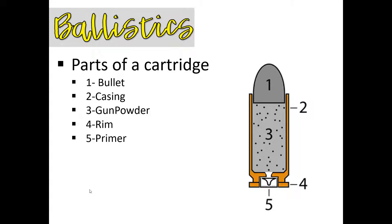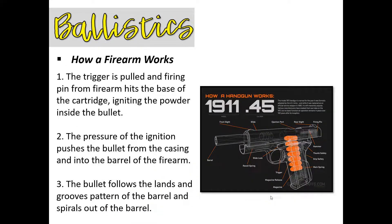Let's look at the parts of a modern day cartridge. Starting with the bullet — this is the projectile. Then you have the case, which holds all the parts together. Then there's the gunpowder. The rim provides the extractor on the firearm a place to grip the casing so it can be removed from the chamber once fired. And number five is the primer, which ignites the propellant.